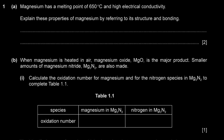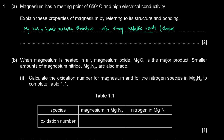Magnesium has a giant metallic structure with strong metallic bonds. You can also say strong electrostatic forces of attraction — metallic bonds are electrostatic forces of attraction between cations and delocalized electrons. Therefore, it has a high melting point. You have to justify the physical properties by referring to the structure.